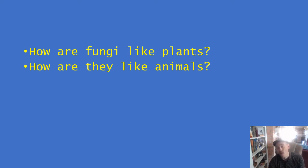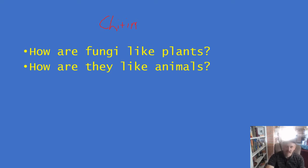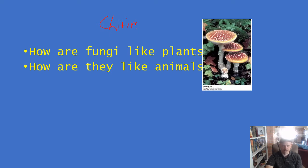Fungi are also like plants in that they have a cell wall, but their cell wall is made of chitin, not cellulose. Chitin is a material found in some animals like arthropods, so the material is animal-like, but the cell wall structure is more like what you'd see in a plant — except it's made of chitin.